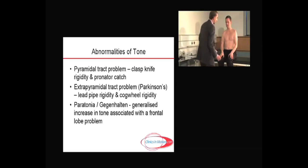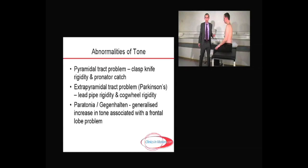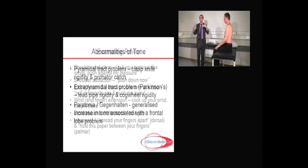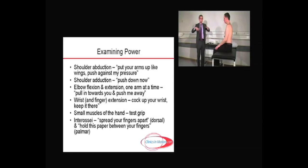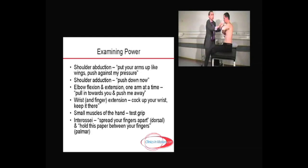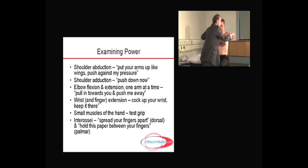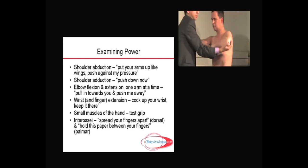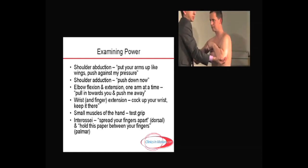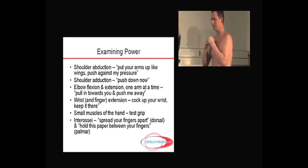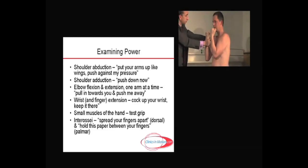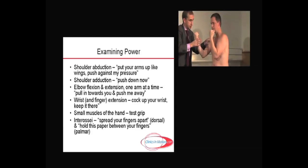After checking tone in each arm, go for power. I try to examine power together to minimise stress on myself and the patient. First, ask the patient to put their arms up like wings and test shoulder abduction — push up as high as you can against my pressure. Then slip hands under and test adduction — bring them down. Then hold hands up and test elbow flexion and extension: pull me towards you, then push me away. Do both sides.